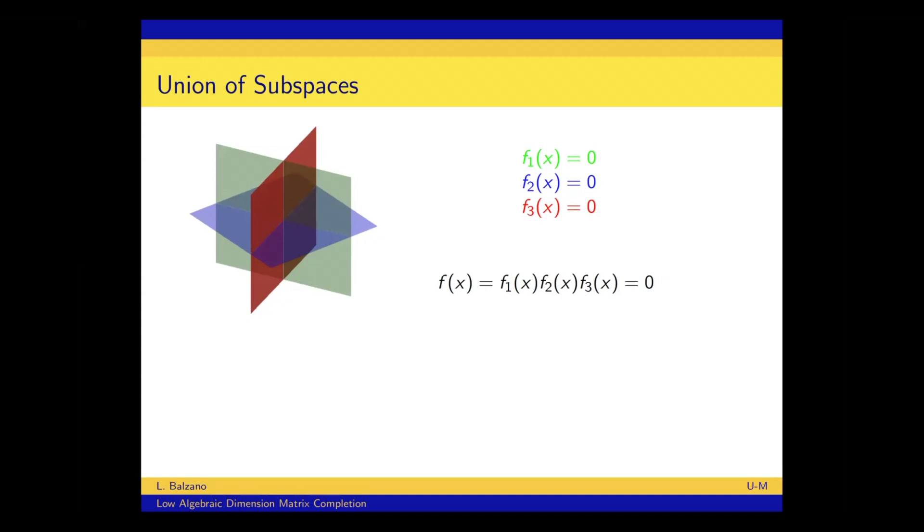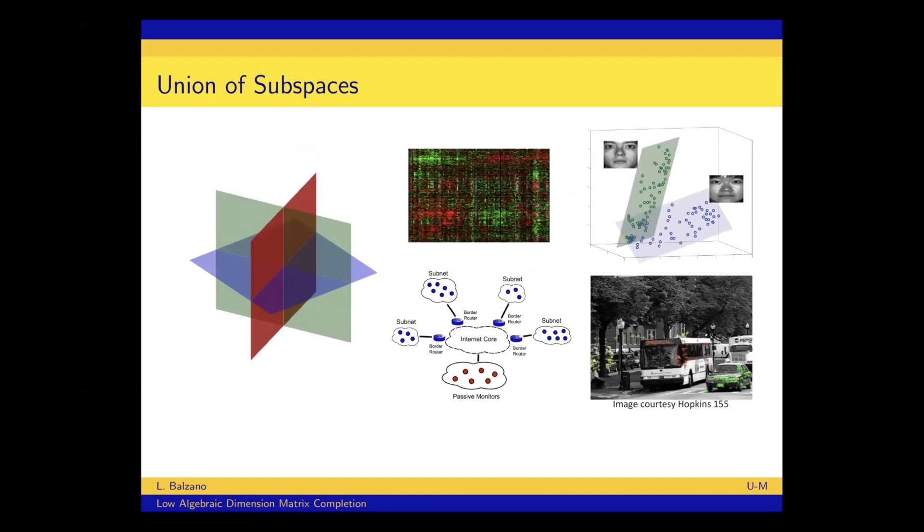So varieties are a very rich type of model that we can use. And just to point out here actually it's something kind of different from a manifold. Manifolds are more general in other ways in the sense that they're not necessarily defined by polynomials. But a variety can be something that has like intersections and points where the dimensionality is different in a local region, which is different than a manifold.